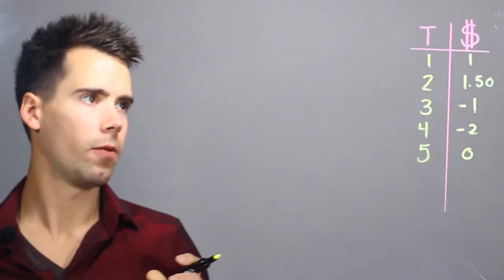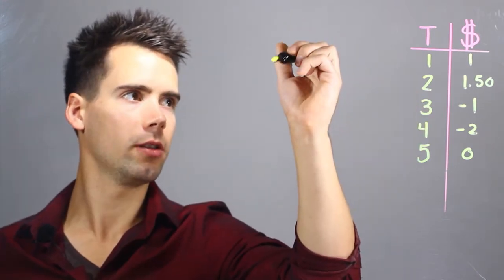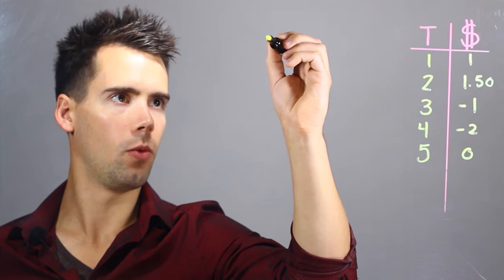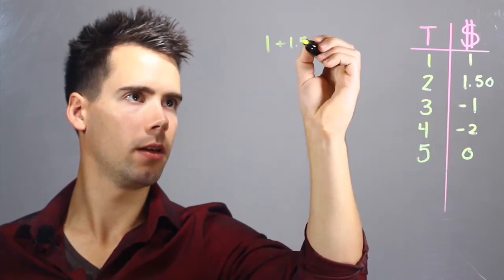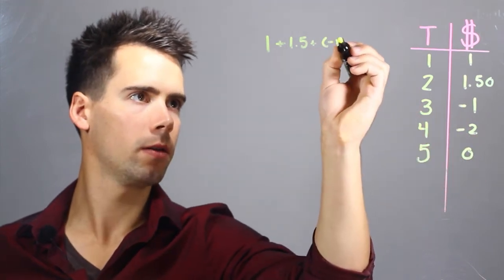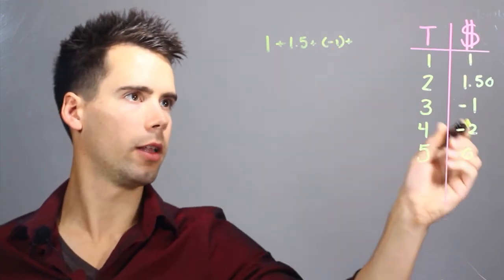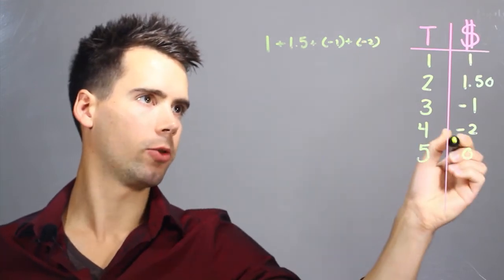Okay. And now if we want to find the average of this, it's simply the transaction dollar amount. So one plus 1.50 plus negative one, plus negative two.